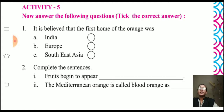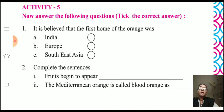Second one: complete the sentence — fruit begins to appear when fruit begins to appear in the season. The meditative orange is called a blood orange because its pulp is deep red in color.